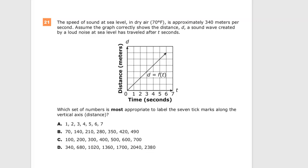Which set of numbers is most appropriate to label the seven tick marks along the vertical axis? Let's take a look at how this data comes about. We'll make a table with time and then distance.